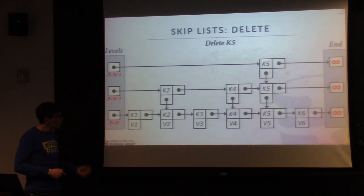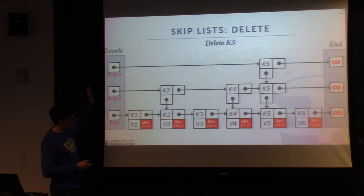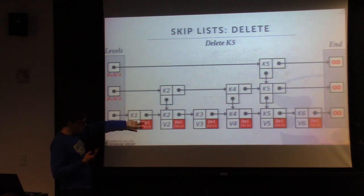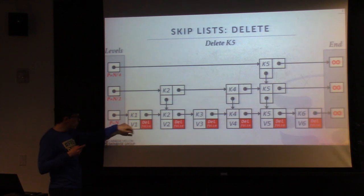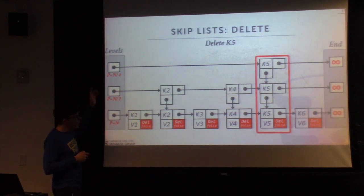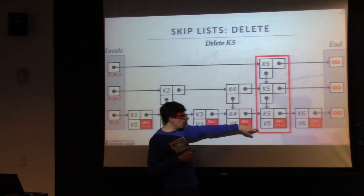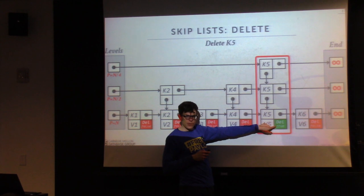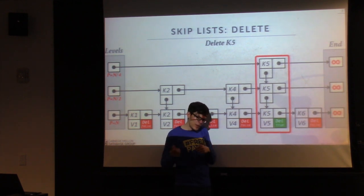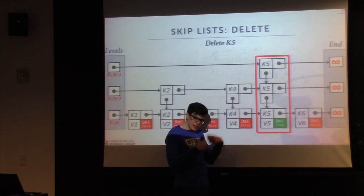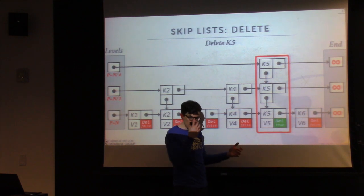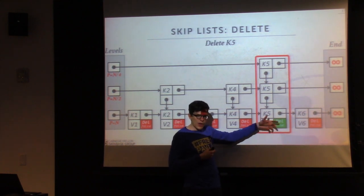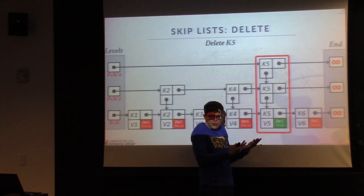Let's say we want to delete key 5 that we just inserted. For all the leaf nodes, we have a little boolean flag saying whether the node has been deleted. We do our search, find our entry, and flip the flag to true. It can only go in one direction — you can't undelete it. If someone tries to insert the same key after it's marked deleted, they just create a new entry. You don't need a CAS for the flag flip because if two threads do it simultaneously, it always goes to true — it doesn't matter who wins.